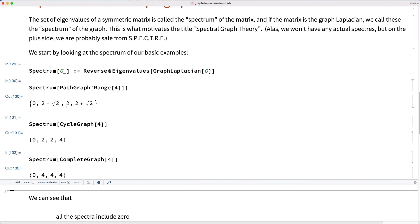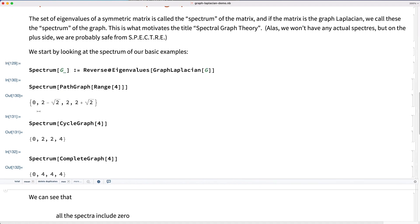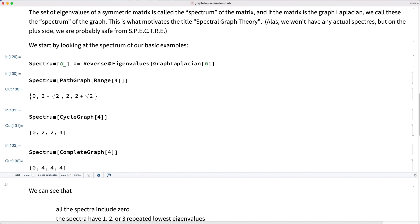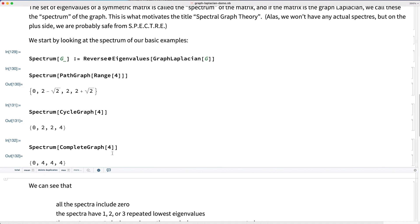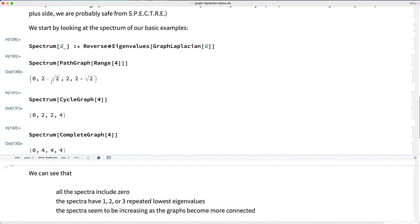You can notice a couple things. All the spectra include zero, in fact that's the lowest eigenvalue for all our graphs. There's one lowest eigenvalue for the path graph, two repeated lowest eigenvalues for the cycle graph, and three repeated lowest eigenvalues for the complete graph. And finally, the graph spectrum, the values seem to be increasing as we add more edges to the graph. So it seems to be increasing as the vertices become more and more connected with each other.